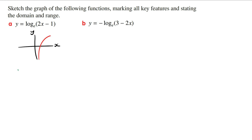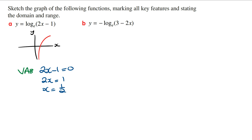For the vertical asymptote, we let 2x minus 1 equal 0 and solve for x. So 2x is equal to 1, and therefore x is equal to one half.